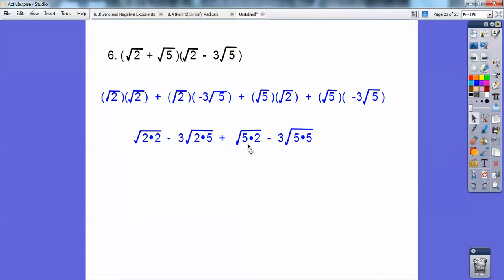So I'm going to have some like terms right there. So this is 2. This is a -15 right here. I'm going to combine those like terms to get a -13. And then I have -3√10 plus there's an imaginary 1 right there plus 1√10. It's going to get me -2√10. So -13 - 2√10.